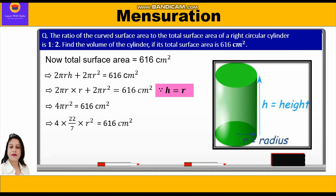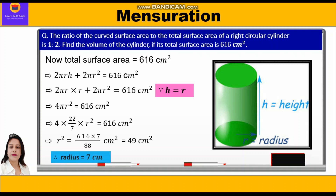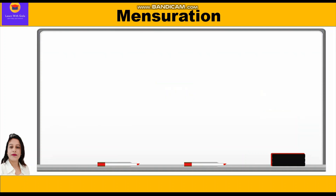So 4 × (22/7) × r² = 616. Therefore r² = 616 × 7 / 88 = 49 cm². Thus r = √49 = 7 cm. The radius of the cylinder is 7 cm.